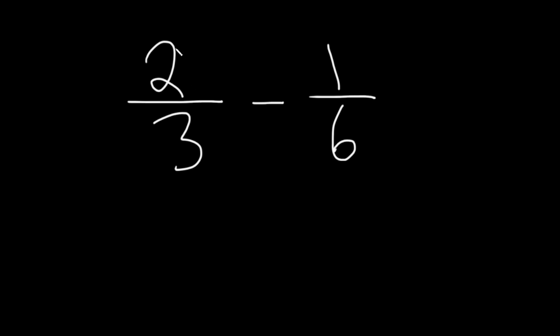The denominator in the first fraction here, 2 thirds, is 3. And the denominator in the second fraction here, 1 sixth, is 6. So they're different. So we need to make them the same in order to subtract.